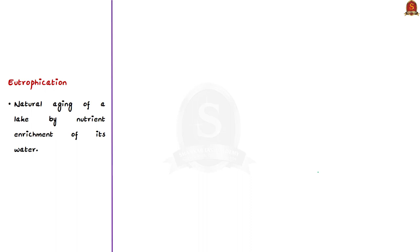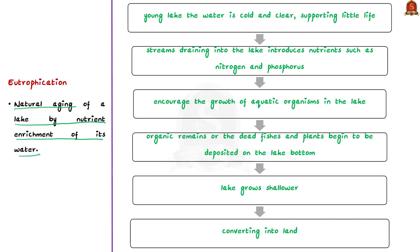Eutrophication is the natural aging of a lake by nutrient enrichment of its water. In a young lake, the water is cold and clear and supports little life. With time, streams draining into the lake introduce nutrients such as nitrogen and phosphorus, increasing aquatic organism growth. As the lake's fertility increases, plant and animal life multiplies, and organic remains begin to be deposited on the lake's bottom.